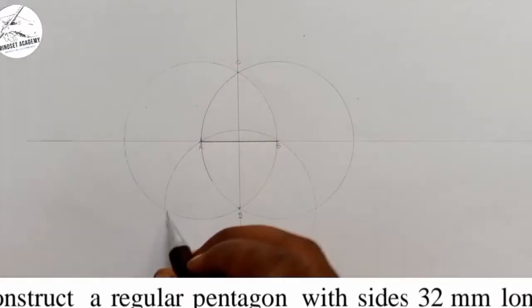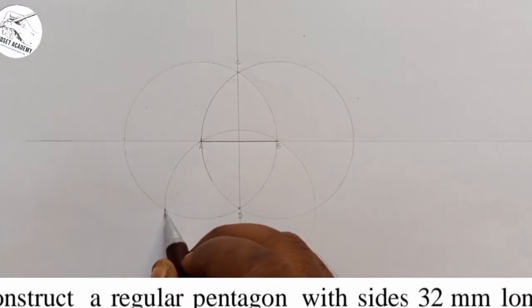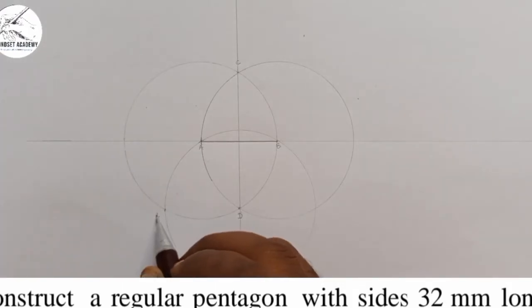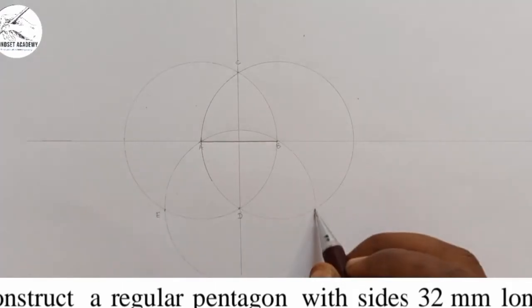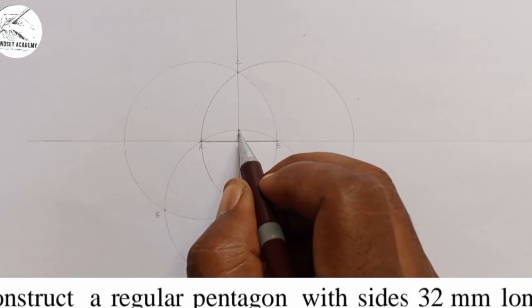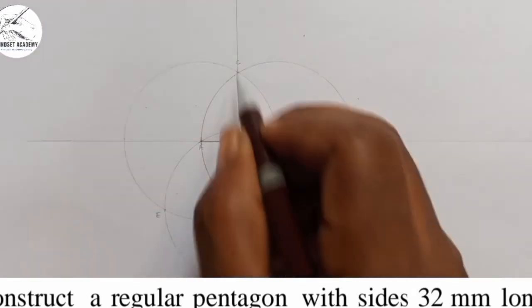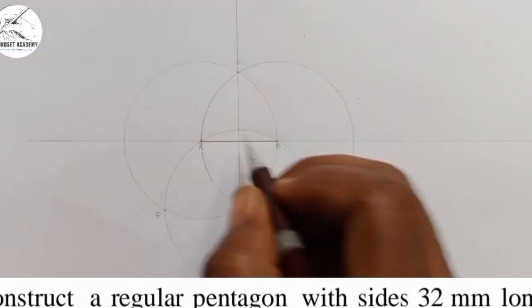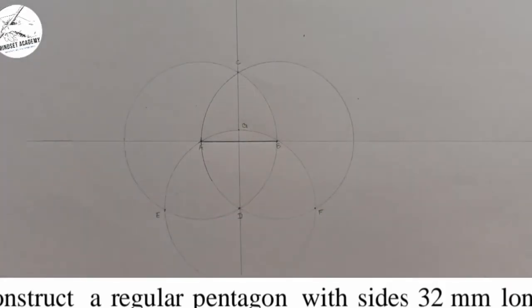Where the circle cuts the first circle, I will call it point E. And where the circle cuts the second circle, I will call it point F. And where the circle cuts the vertical line DC, I am going to call it point G.